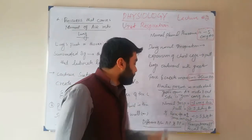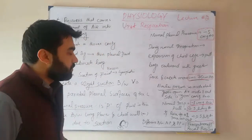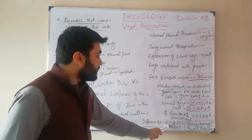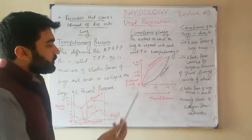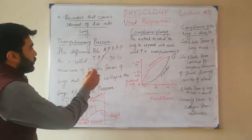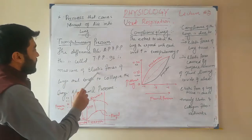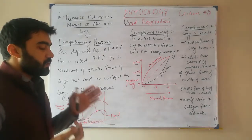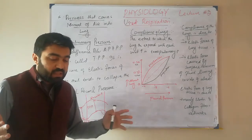The next is transpulmonary pressure, also called recoil pressure. The difference between alveolar pressure and pleural pressure is called transpulmonary pressure. It is the measure of elastic forces of the lung — the forces that tend to collapse the lung. It is also called recoil pressure, meaning how much recoil is present in the lung to contract.